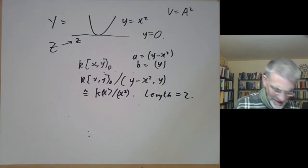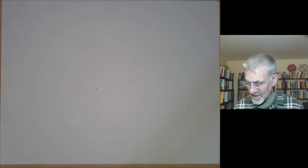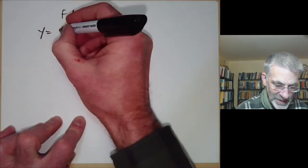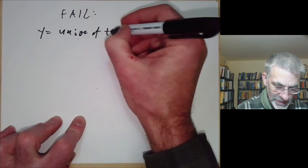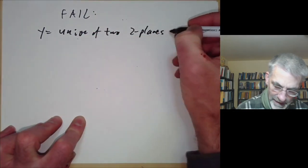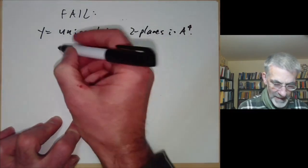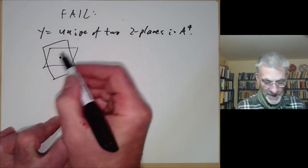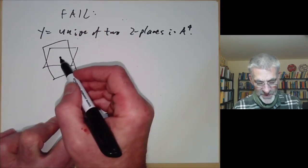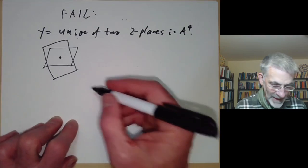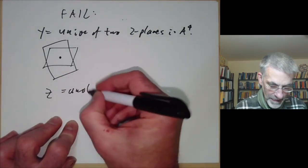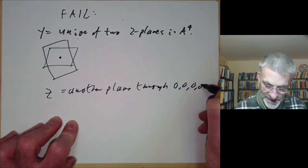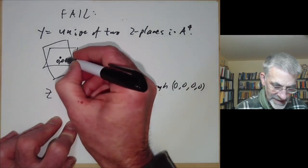However, it sometimes fails. Here's an example where it fails. We take Y to be the union of two 2-planes in four-dimensional affine space. Picture Y as one 2-plane and another 2-plane: they meet at a point because we're in 4-dimensional space, not 3-dimensional — they don't intersect along a line. And we take Z to be another plane through the point (0,0,0,0), so they intersect at one particular point.